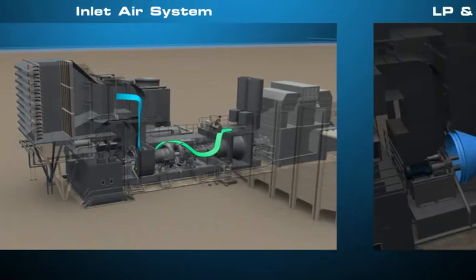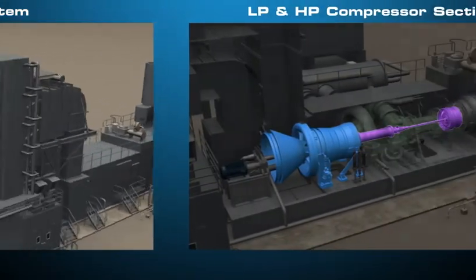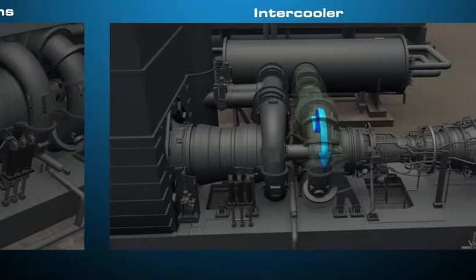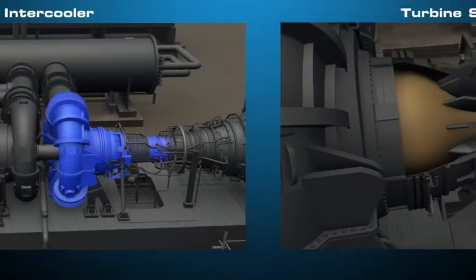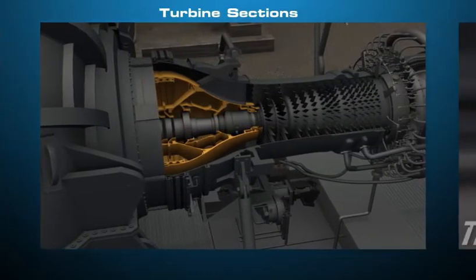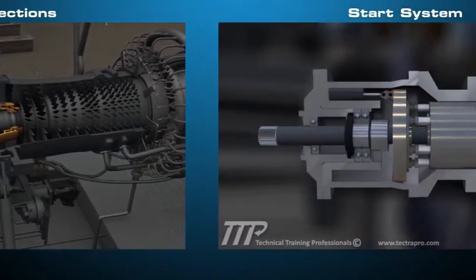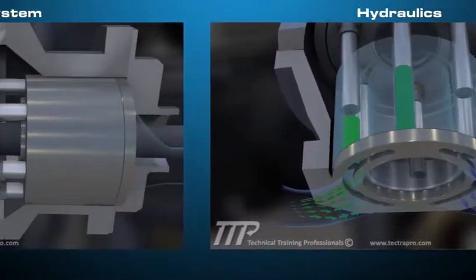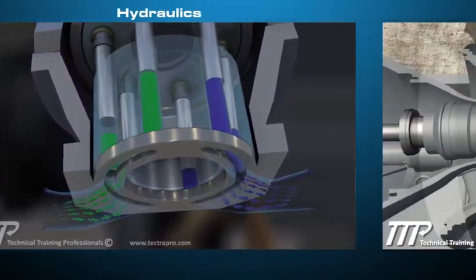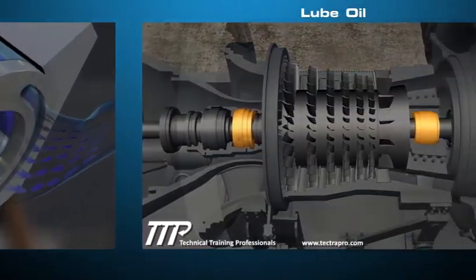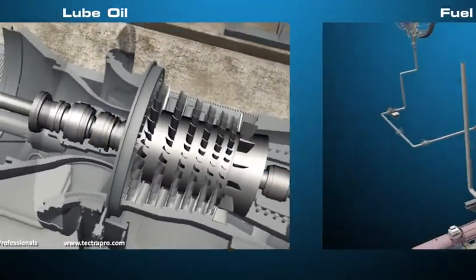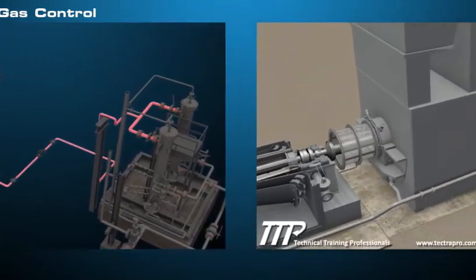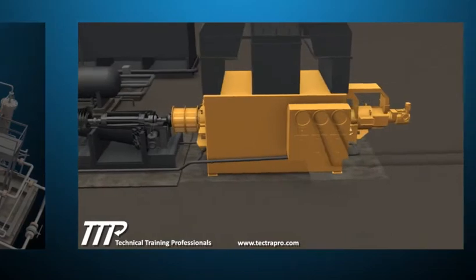The main systems include the inlet air system, LP and HP compressor sections, intercooler, turbine sections, start system, hydraulics, lube oil, and fuel gas control. These systems work together to produce torque that will drive an electric generator.